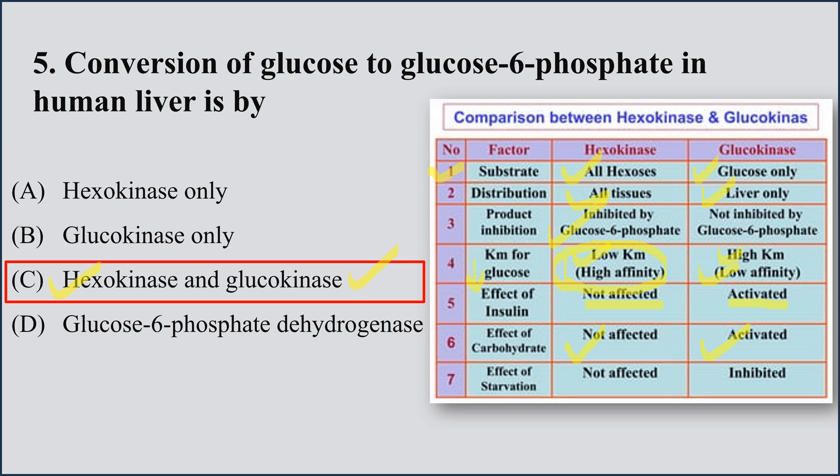After the meal, glucokinase acts on high glucose levels. Effect of starvation: hexokinase is not affected, while starvation inhibits glucokinase — because in starvation, glucose levels are low, and glucokinase acts on high glucose levels. So in starvation, glucokinase will not be active.